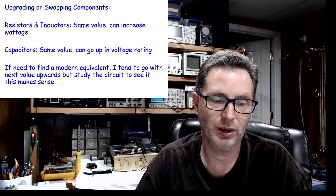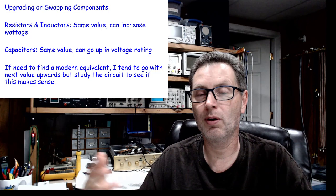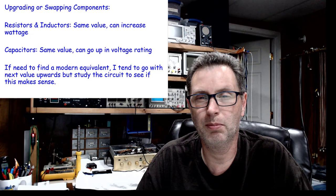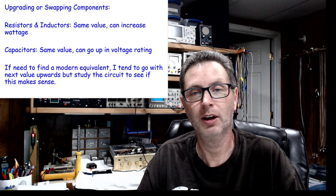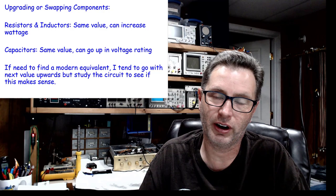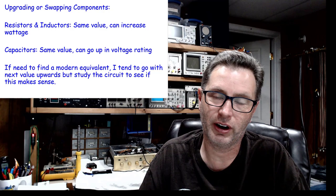Next question: if you need to find a modern equivalent, let's say you've got a 0.02 microfarad capacitor in an older piece of tube gear and you need to replace that. Well, they don't make 0.02 capacitors anymore—it's not a common standard value. They do make them, but they're somewhat expensive and kind of specialized. Common values would be 0.022 microfarads or 0.018 microfarads.